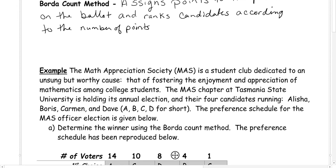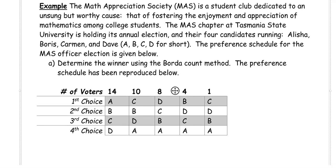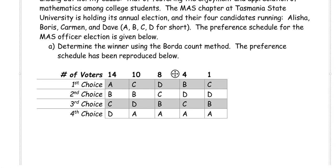We're going to be taking a look at the Math Appreciation Society, the MAS — the student club dedicated to fostering the enjoyment and appreciation of mathematics among college students. The MAS chapter at Tasmania State University is holding its annual election, and there are four candidates running: Alicia, Boris, Carmen, and David — A, B, C, and D for short. We have our Preference Schedule below, and we want to determine the winner using the Borda Count Method.